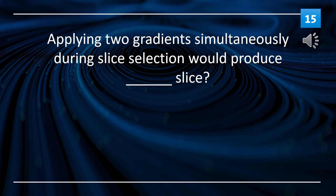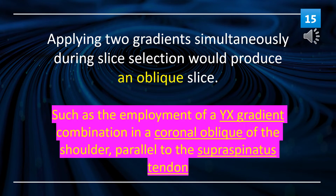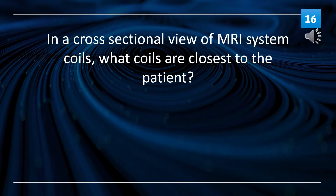Applying two gradients simultaneously during slice selection would produce an oblique slice. An oblique slice is the employment of a Y and X gradient combination, such as in a coronal oblique of the shoulder, parallel to the supraspinatus tendon.